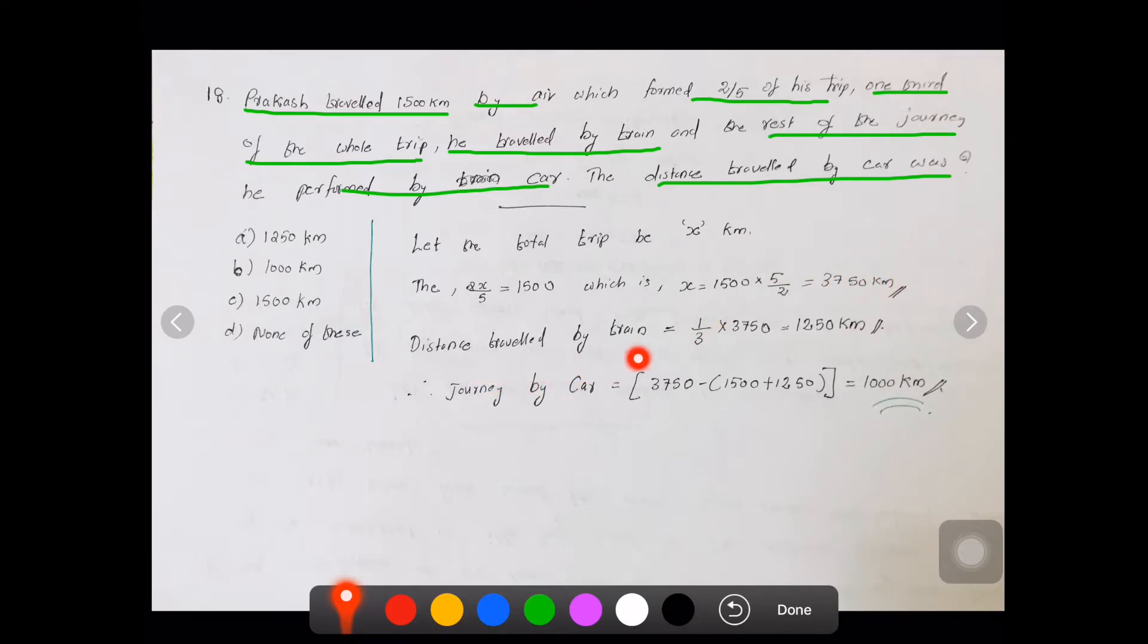Let us find distance travelled by the train. We know that 1/3 of the whole trip was travelled by train, so 1/3 into 3750 we will get 1250 km.